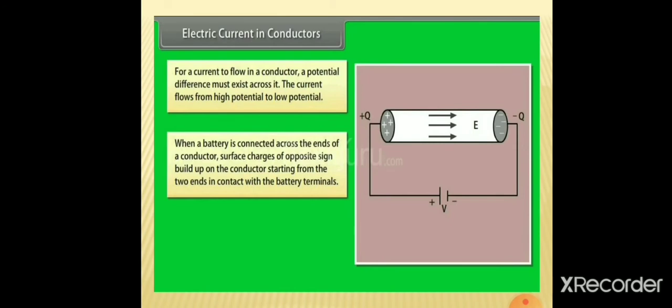In the case of conductors, for a current flow there must be a potential difference across it, and current always flows from high potential to low potential. When a battery is connected across the ends of a conductor, surface charges of opposite sign build up on the conductor starting from the two ends in contact with the battery terminals. You can see the direction of electric field which is formed inside the conductor.